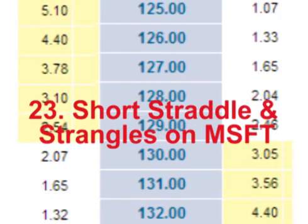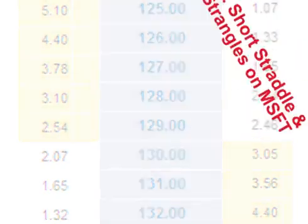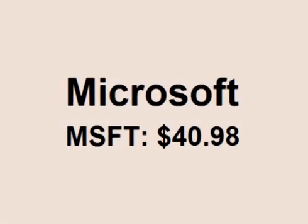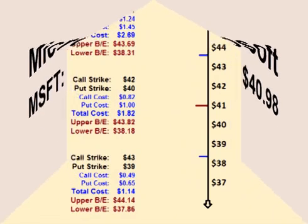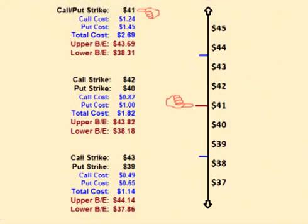Hello and welcome. In this video, we will look at examples of a short straddle and two short strangles that a trader could place on Microsoft. At the time of making this video, Microsoft is $40.98 a share. A trader could place a short straddle by selling the $41 call option and selling the $41 put option that both expire in about six weeks.